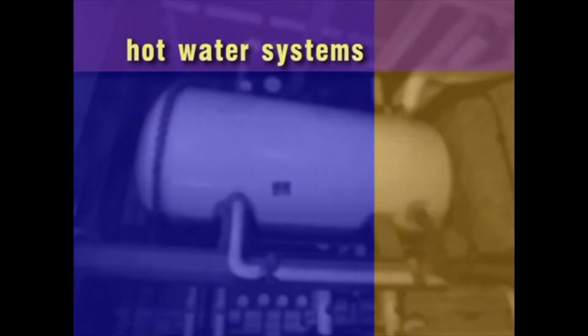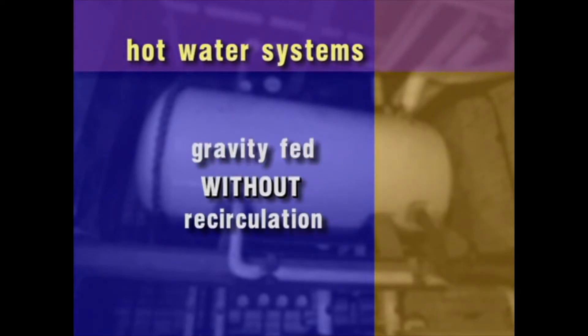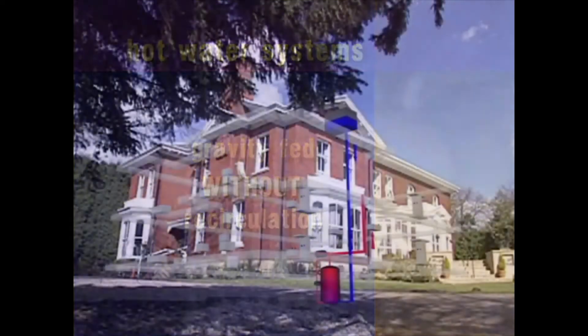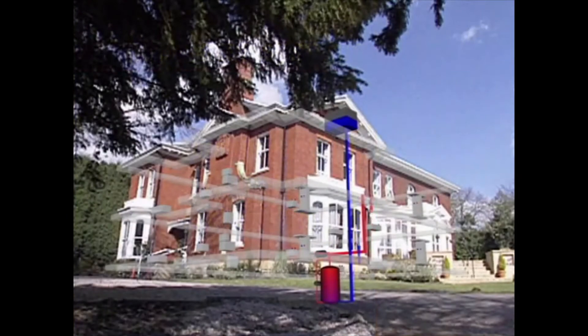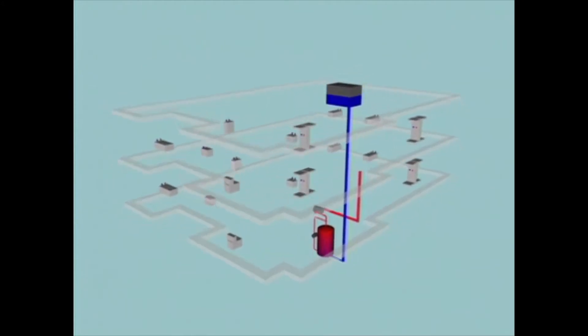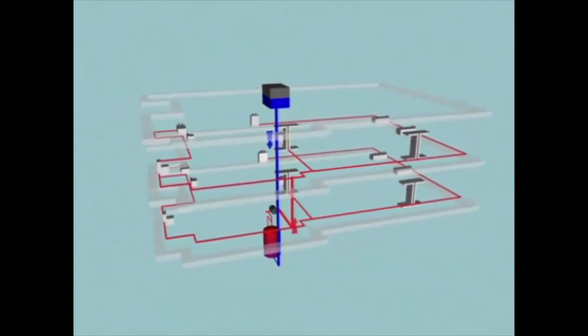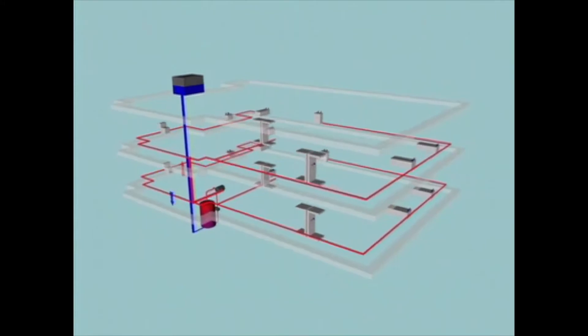Hot water systems can be divided into two types. A gravity-fed system without recirculation is used in most houses and some business premises. The cold water storage tank at the top of the building feeds the calorifier or water heater. Pipes run directly from the calorifier to the various hot water outlets.